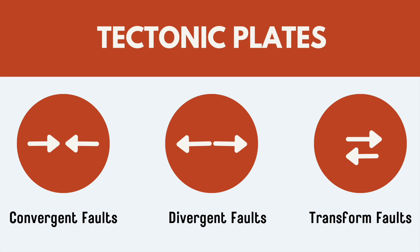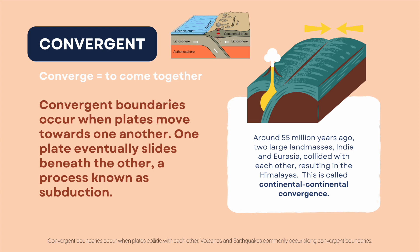Convergent means coming together, divergent goes apart, and transform slides past each other. Convergent boundaries occur when plates move towards one another. One plate eventually slides beneath the other, a process known as subduction. Around 55 million years ago, two large landmasses — India and Eurasia — collided with each other, resulting in the Himalayas. This is called continental-continental convergence.